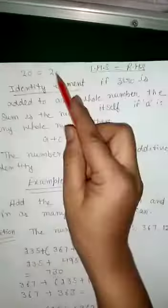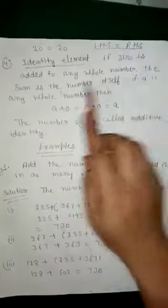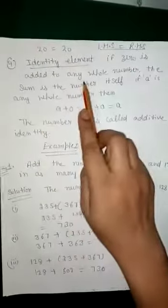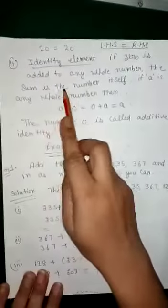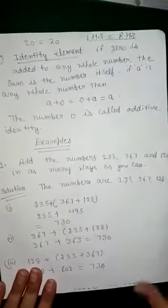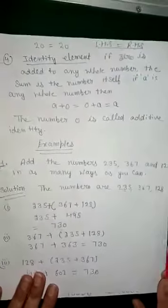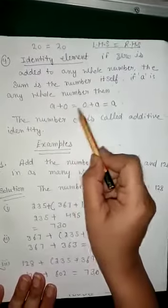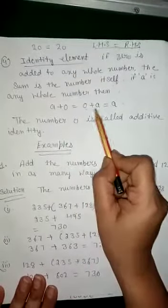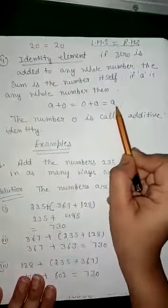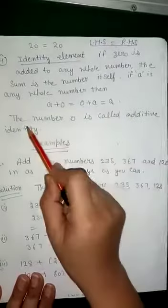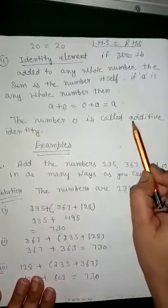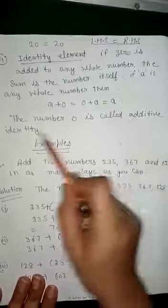The fourth property is the additive identity. If zero is added to any whole number, the sum is the number itself. If a is any whole number, then a + 0 = 0 + a = a. The number zero is called the additive identity.